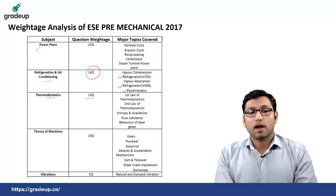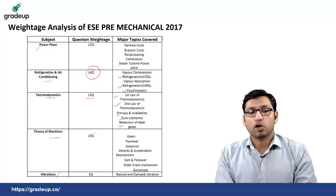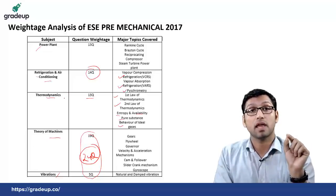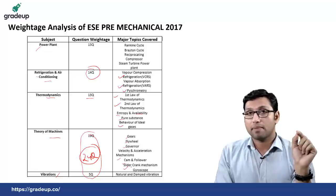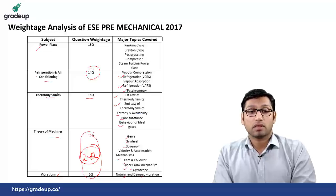From thermodynamics there were totaled 13 questions from first law of thermodynamics, second law of thermodynamics, entropy and availability, pure substance and behavior of ideal gases. From the theory of machines and vibrations there were totaled 24 questions from the topics of gears, flywheel, governor, velocity and acceleration mechanism, cam and follower, slider crank mechanism, gyroscope and natural and damp vibration. These were important topics from theory of machines and vibration from which total 24 questions were asked in ESE prelims 2017 paper.